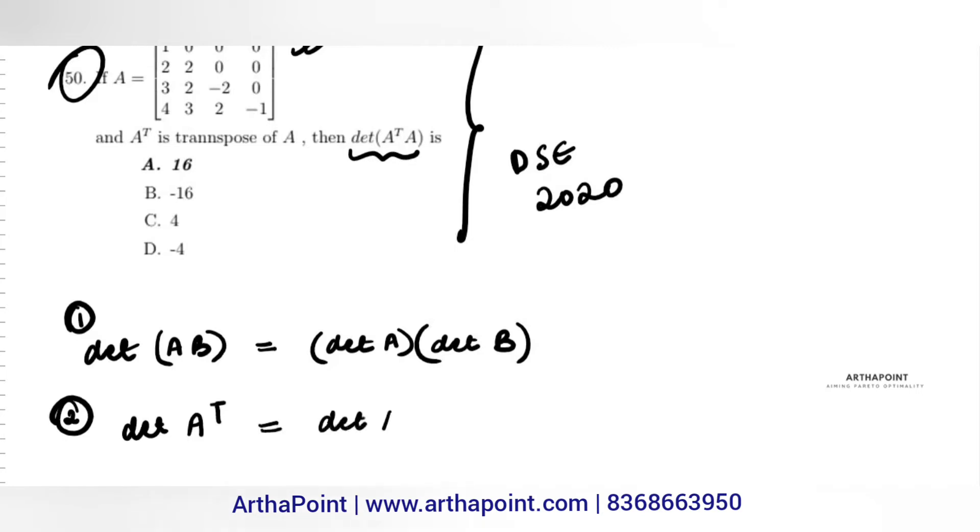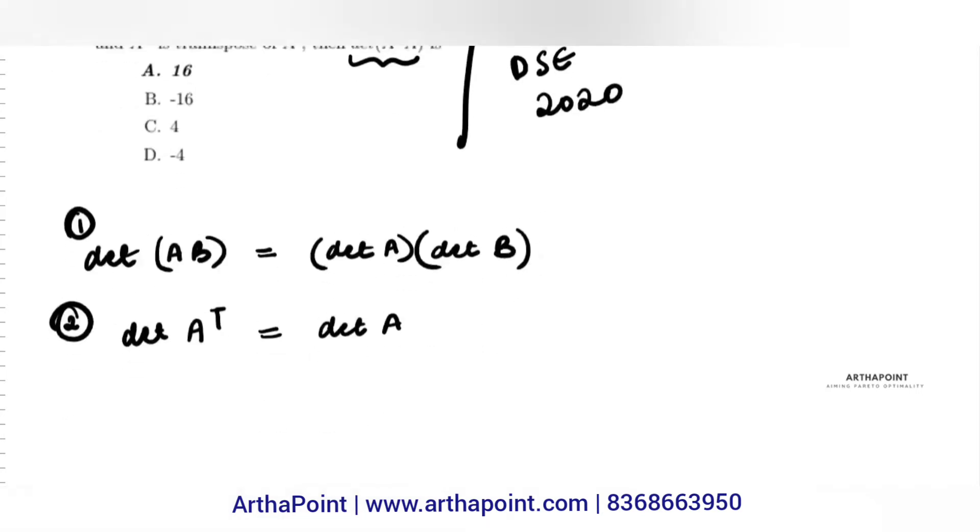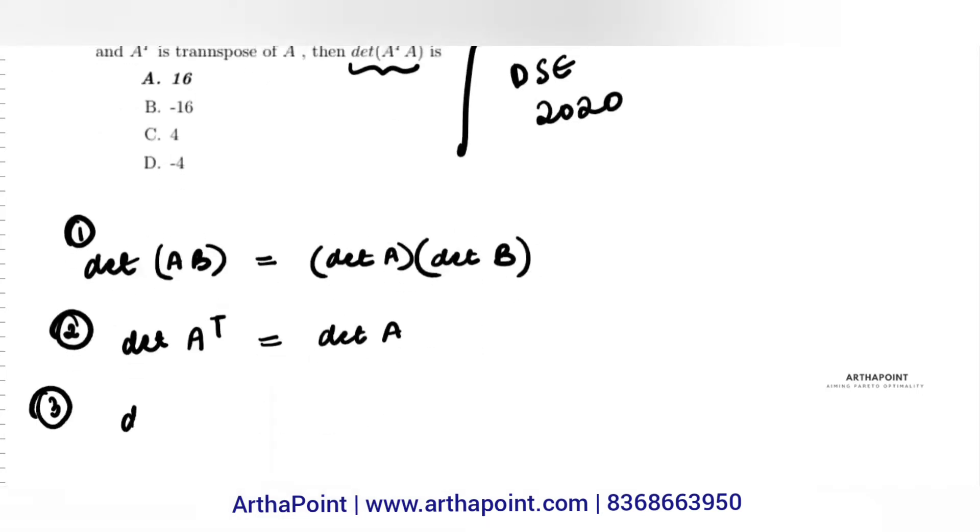Third thing, determinant of A transpose A is nothing but determinant of A transpose into determinant of A, but both are same. So this is determinant of A into determinant of A.